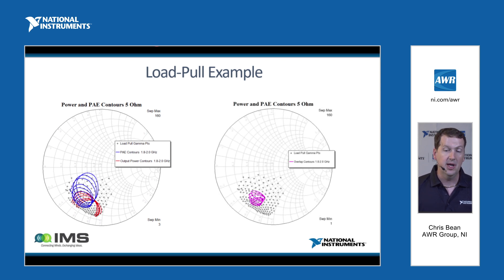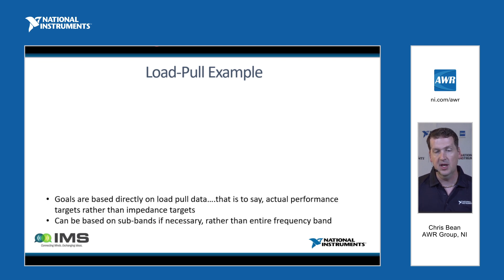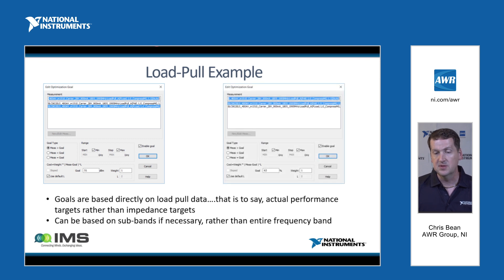Another way to look at this is with what we call an overlap contour — the combination of both performance criteria. Each oval contour, at a different fundamental frequency, is the region where we're able to meet both the 63% efficiency and 51 dBm output power (roughly 125 watts) criteria. So instead of having the designer put in specific impedance targets for the synthesis problem, we just put in goals based directly on the load-pull data — asking for 51 dBm or greater and 63% efficiency or greater, with no need to stipulate specific impedances across each fundamental frequency point.